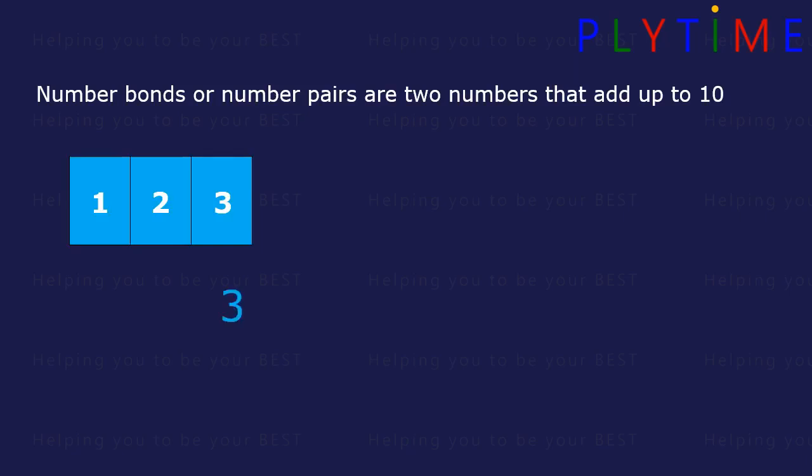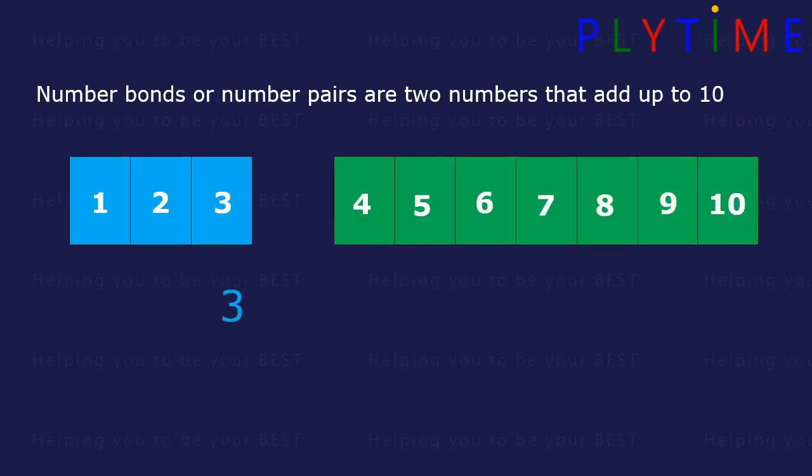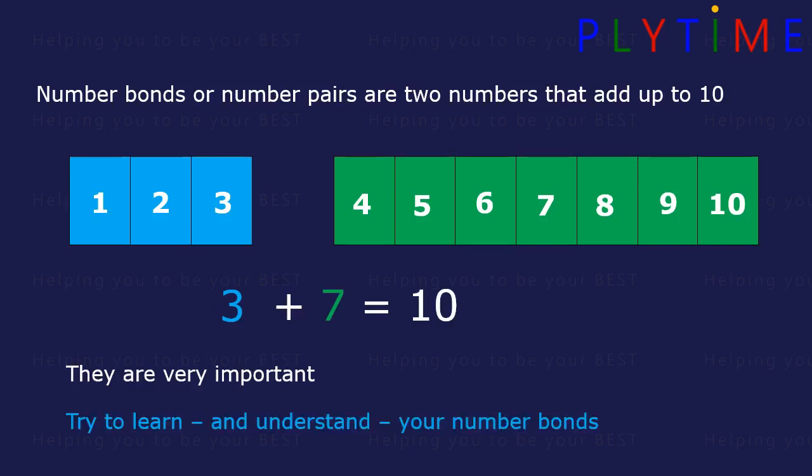3 add 7 is 10. This is a Number Bond. They are very important. Try to learn and understand your Number Bonds.